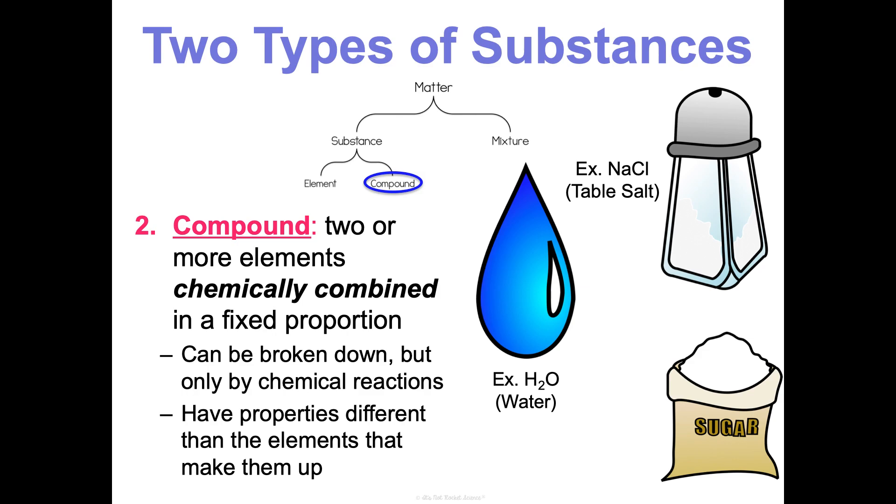Similarly, when we look at water, water is two atoms of the element hydrogen chemically combined with one atom of the element oxygen. It's a two to one ratio in this fixed proportion, and it makes water. Very different from the oxygen that you breathe in and the hydrogen gas, which would exist as H2 on its own. Same thing with sugar, C6H12O6. It's six atoms of the element carbon, 12 atoms of the element hydrogen, and six atoms of the element oxygen, chemically combined.